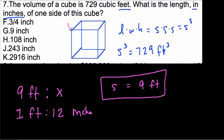We're multiplying 1 foot, we're multiplying 12 essentially by 9—9 groups of 12 inches. That gives us our answer, which is H, 108 inches.